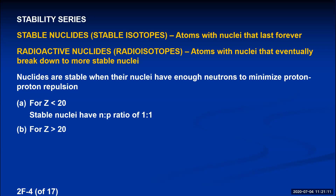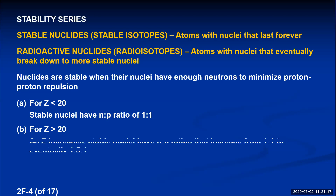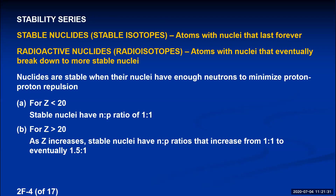For elements with atomic number greater than 20, the number of neutrons must be larger than the number of protons. As atomic number increases, stable nuclei have neutron-to-proton ratios that continue to increase from 1:1 all the way up to about 1.5:1 for the very large atoms.